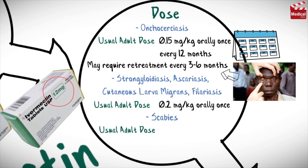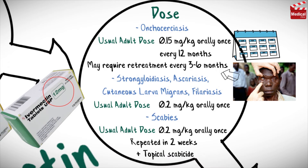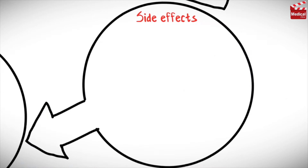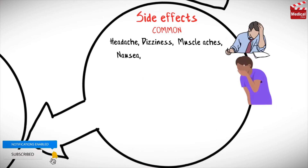The usual dose for adults for scabies is 200 micrograms per kilogram orally, repeated in two weeks. In this case, ivermectin therapy may be combined with a topical scabicide. Common side effects may include headache, dizziness, muscle aches, nausea, diarrhea, or mild skin rash.